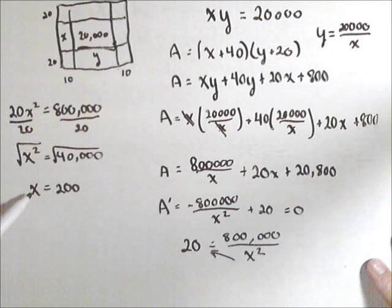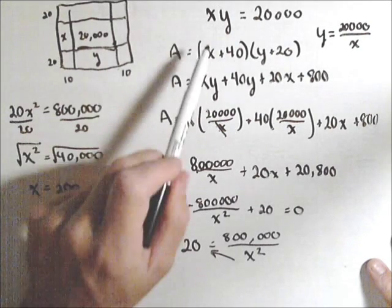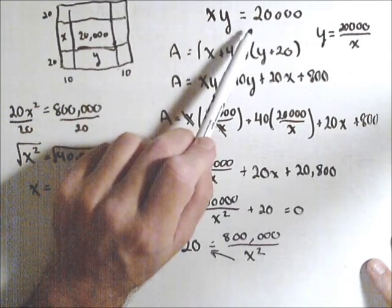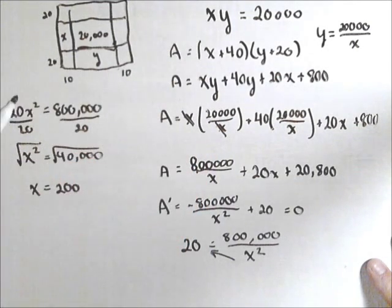So that's one of my critical points, that's my only critical point, so the only other thing we need to check are the end points. So x has to be between 0 and 20,000, because otherwise we won't have any kind of rectangle.